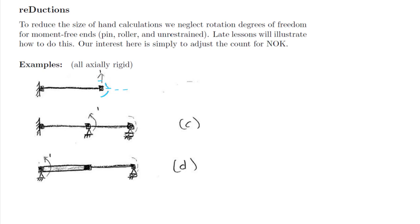Looking at a previous example as well, we have the rotational degree of freedom at the center pin. But the right-hand node is a moment-free end, so we can reduce that degree of freedom.